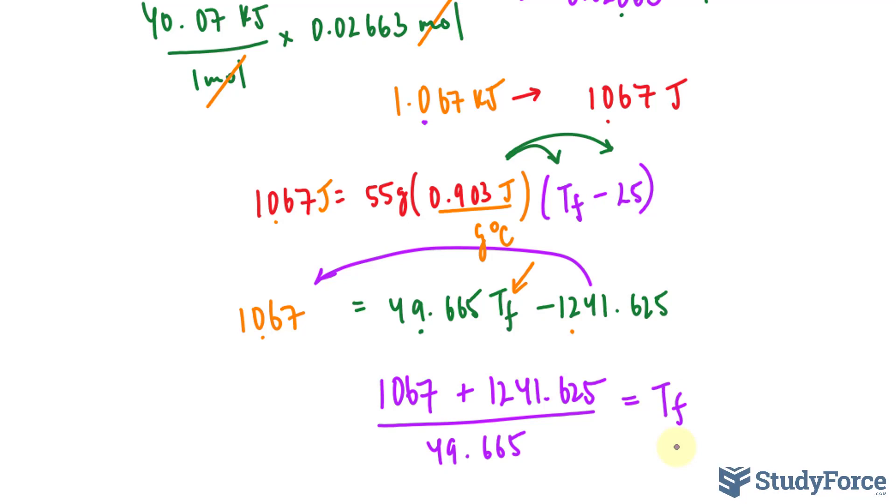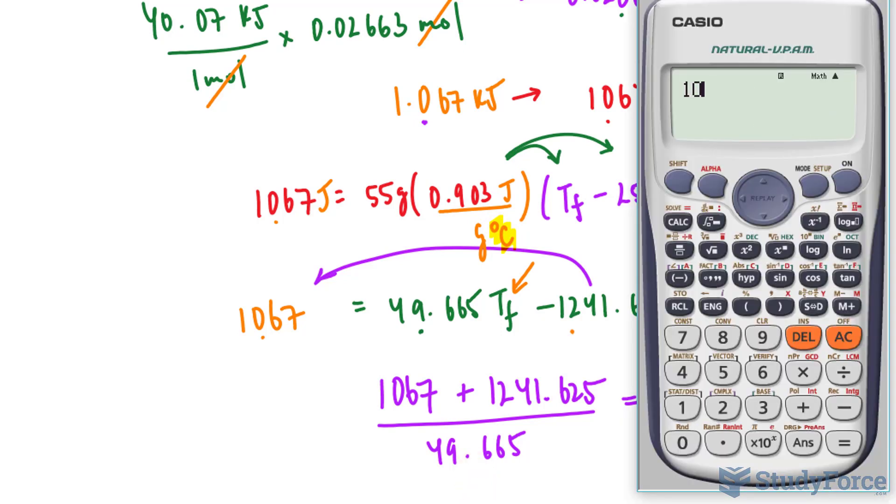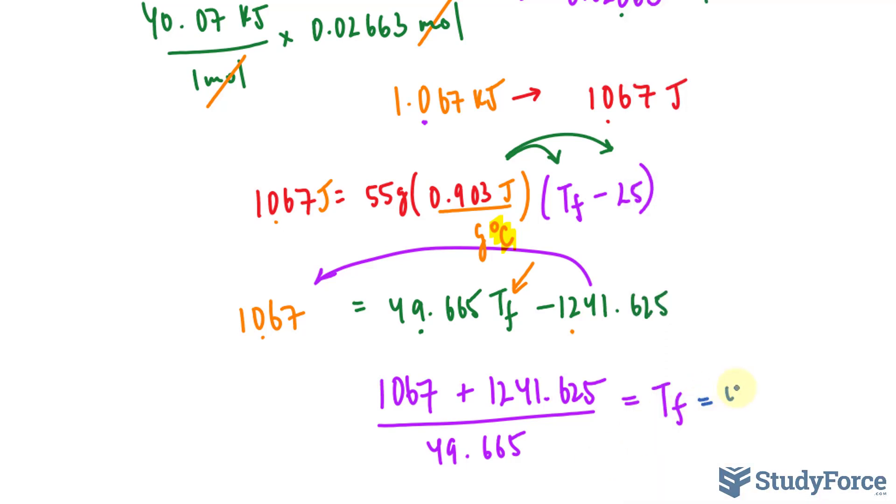The units should all cancel out, leaving you with only Celsius. Let's go ahead and do this: 1067 plus 1241.625 divided by 49.665. We end up with 46.4. And to two significant figures, that's 46 degrees - 46 degrees Celsius.